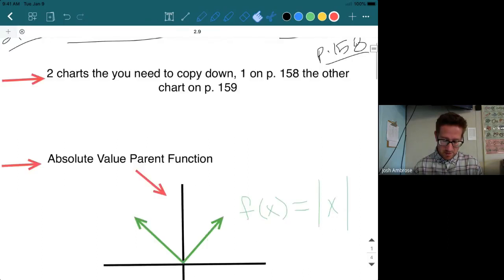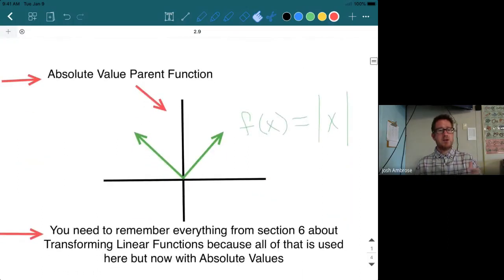So one thing here, they will use the phrase like the parent function of Absolute Value, and this is what it looks like. It makes this perfect V-shape going through the origin (0,0), and that's what a basic parent function would look like. f(x) equals the Absolute Value of x.